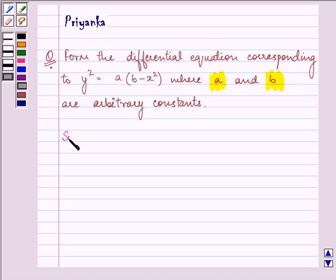Let's proceed with the solution. Here we are given the equation as y² = a(b - x²). Let us open the brackets first. So it would be y² = ab - ax².